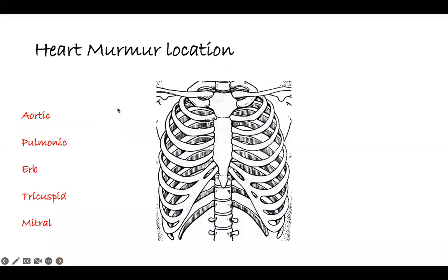As you can see on the left side, we have different kinds of heart sounds and where to look for them. We have the aortic, we have the pulmonic, we have Erb's point, the tricuspid sound, and the mitral sound. And this is the chest wall — a little bit of anatomy.